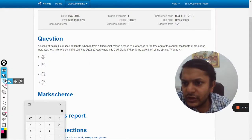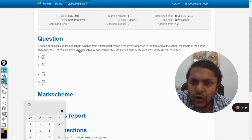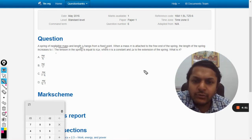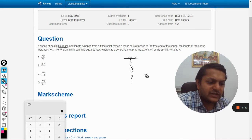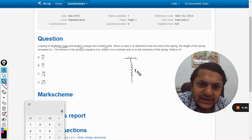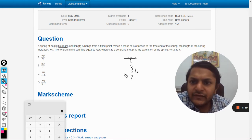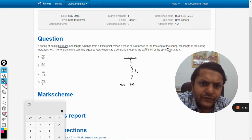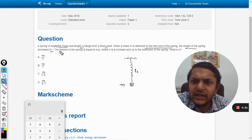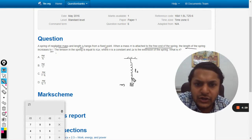Okay, dear students, in this question a spring of negligible mass and length L0 hangs from a fixed point. The original length is given as L0. When the mass small m is attached to the free end, the length of the spring increases to capital L. So now the new length that comes out to be is L.